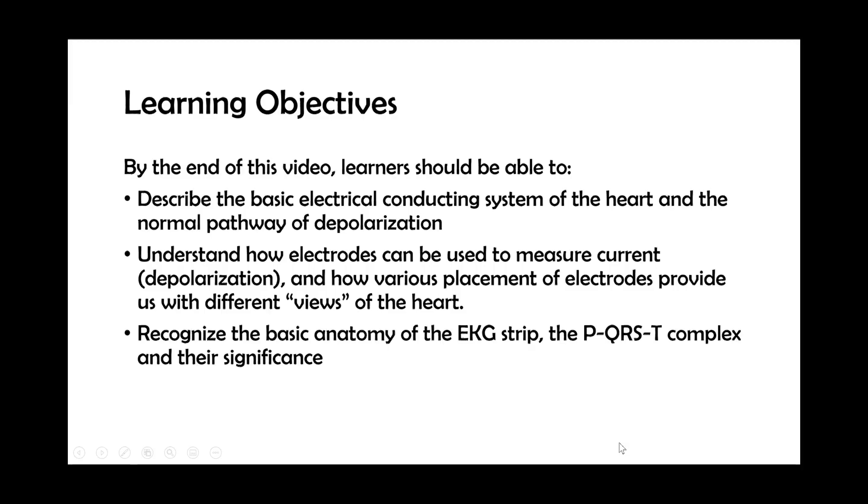These are the learning objectives for this video. We're going to be able to describe the basic electrical conducting system of the heart, as well as the normal pathway of depolarization. We're going to understand how electrodes can be used to measure current, and how various placement of electrodes provide us with different views of the heart. Finally, we'll be able to recognize the basic anatomy of the EKG strip, what a P is, what a QRS is, and what a T is, and how they are significant.